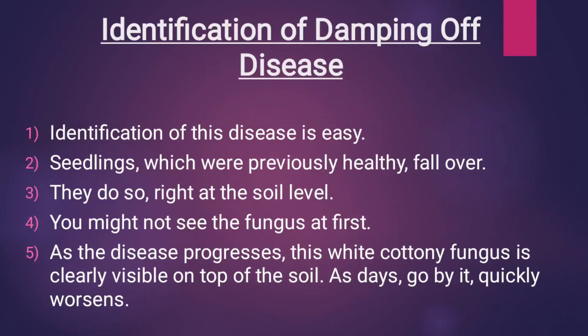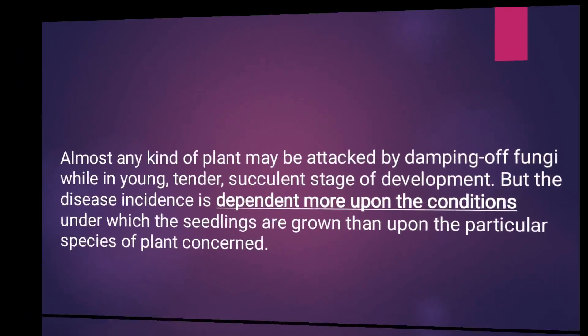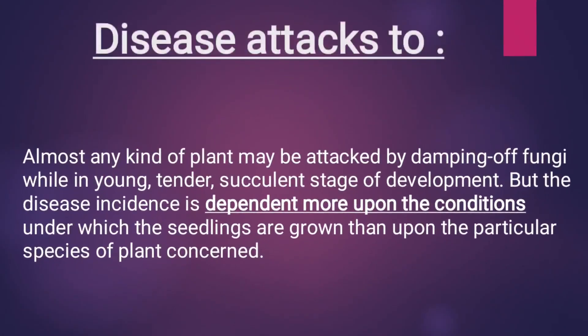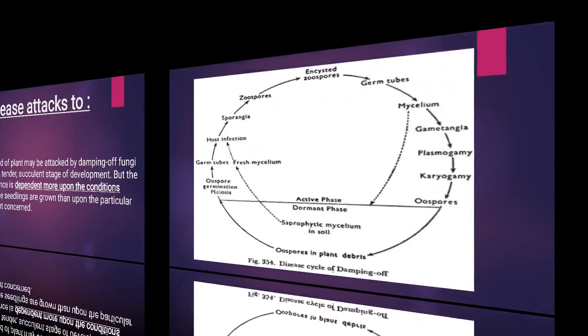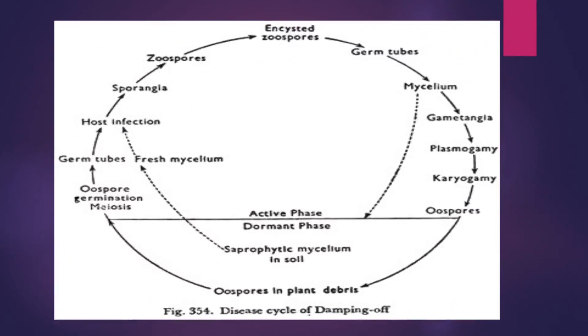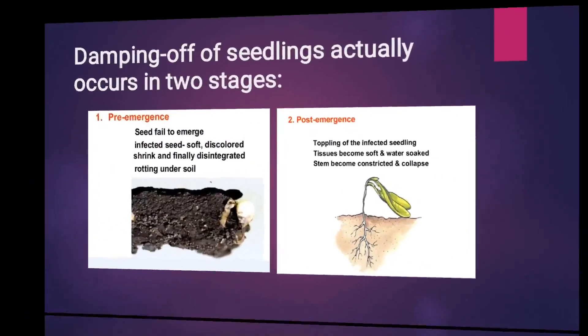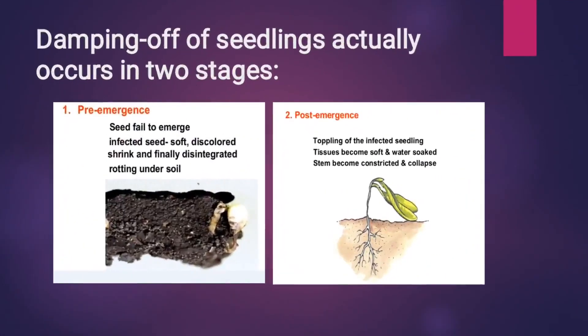The fungus may not appear at first sight, but later on it can appear as a cottony fungus form. This disease attacks the seedling at a younger, tender, succulent stage — it can attack any stage of seedling development. The life cycle is basically two phases: an active phase and a dormant phase.